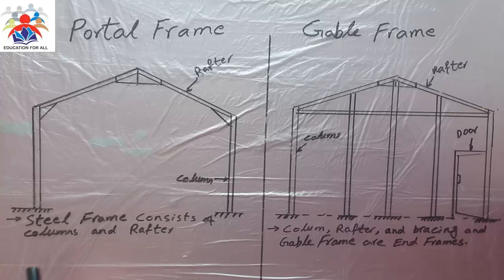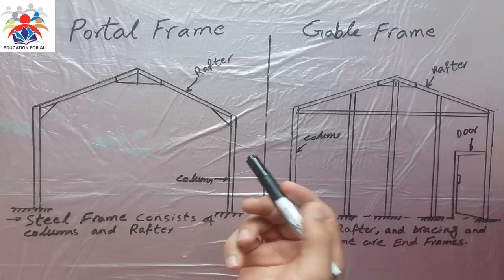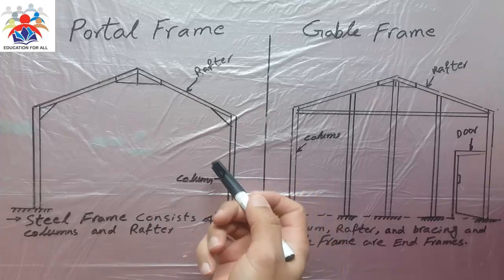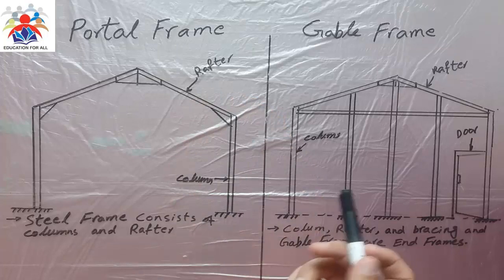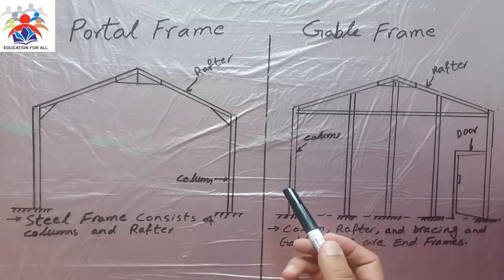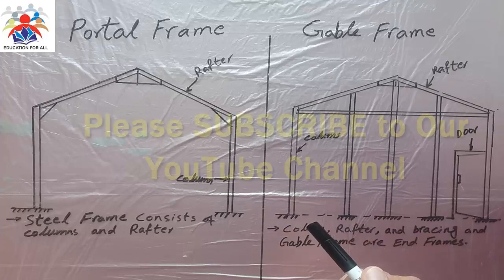A portal frame basically consists of steel frame columns and rafters. As you can see, this is a column, this is a rafter, and you can have a foundation. The gable frame normally consists of columns and rafters as well as bracing.